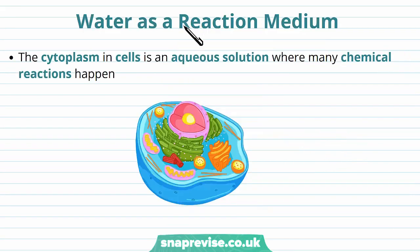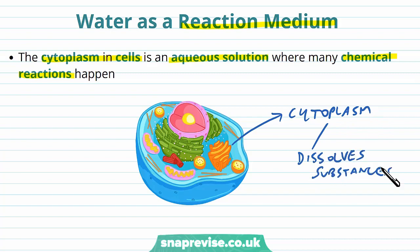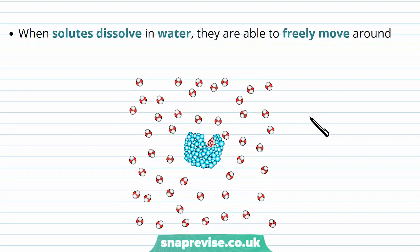Finally, water can act as a reaction medium as well. The cytoplasm of the cell for any organism is always some sort of aqueous solution. It's water which has dissolved lots of solutes, and this is where lots of our chemical reactions happen. Not all of our chemical reactions, but a great amount of them happen in the cytoplasm because it can dissolve certain substances. When these solutes dissolve in that water, they are free to move around, which means they can interact.